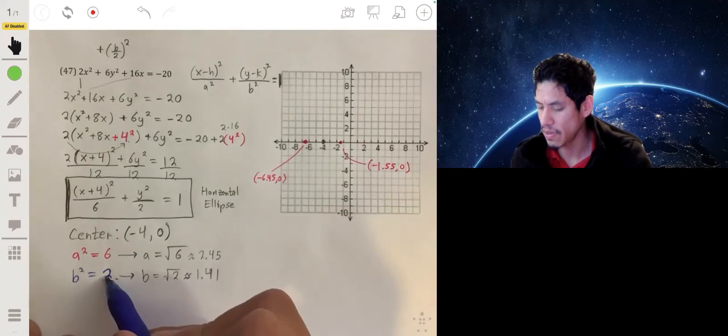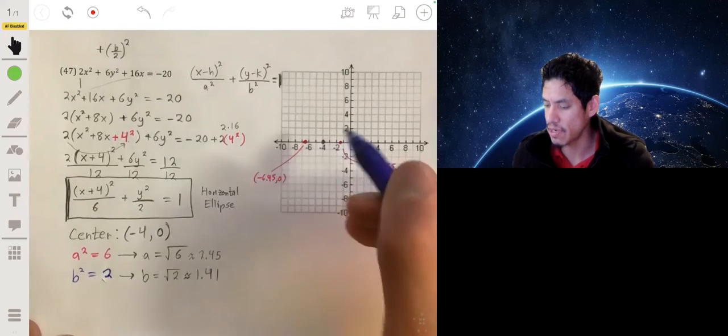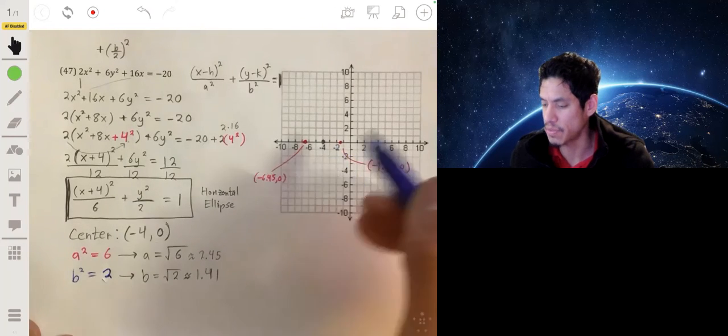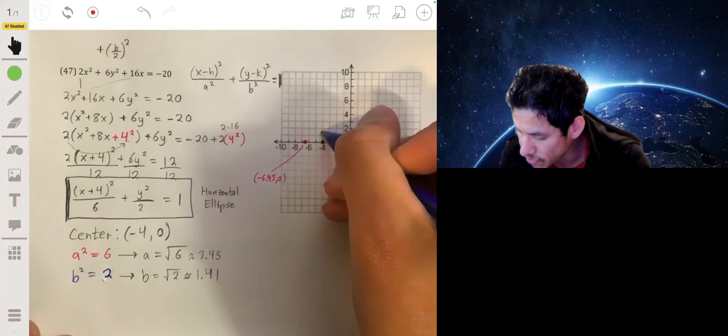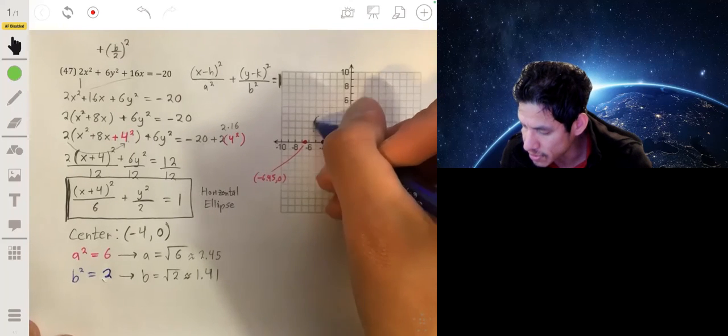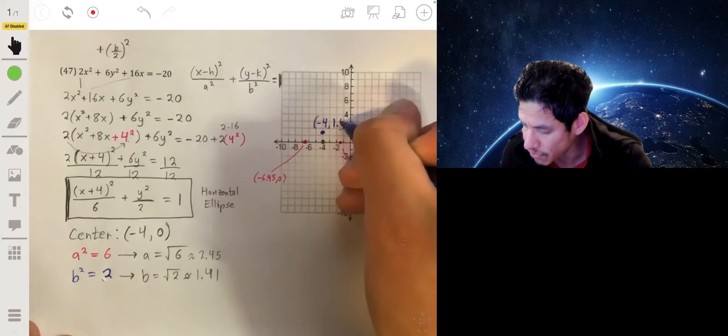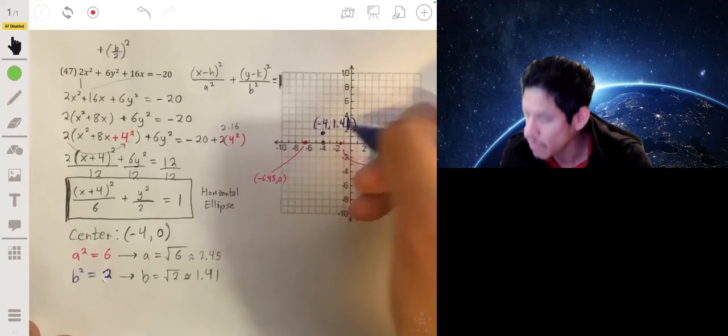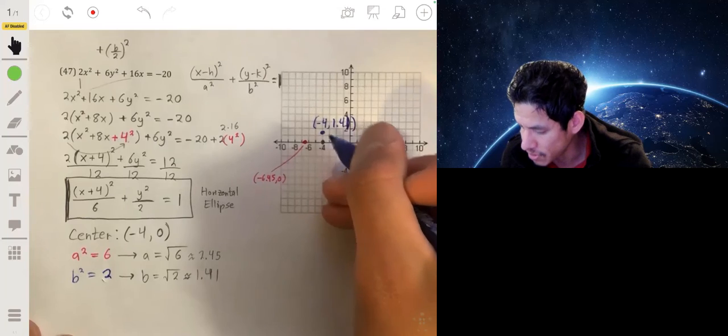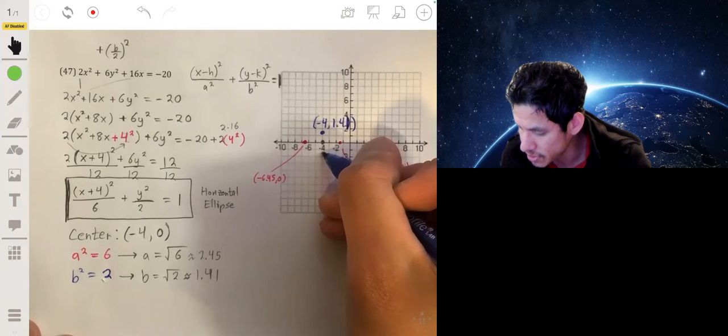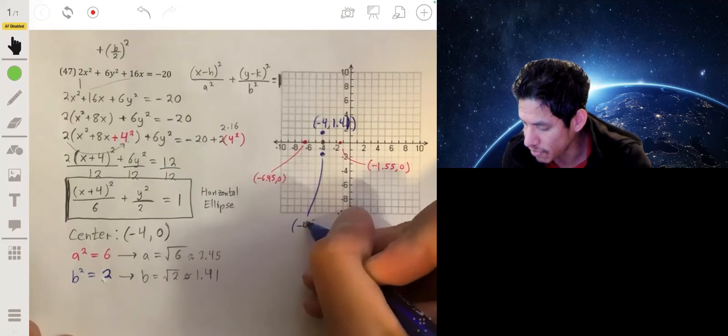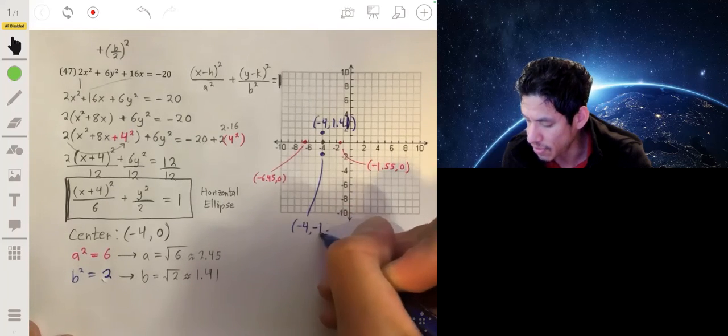Now my co-vertices are going to be above and below the center, and I basically have to move 1.41 units above and 1.41 units below. So that would put me at about negative 4 comma 1.41 for my top co-vertex, and my lower one will be about negative 4 comma negative 1.41.